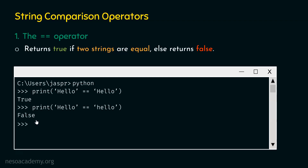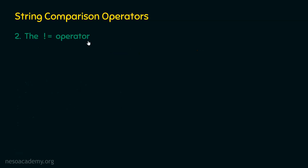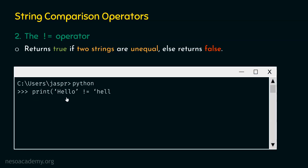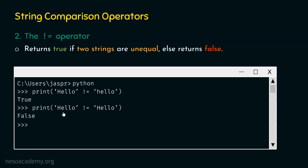Let's move on to the second operator: the not-equal operator (!=). The not-equal operator returns true if two strings are unequal, else returns false — it is just the opposite of the equality operator. For example, print('Hello' != 'hello') returns true because the first characters are not equal. And print('hello' != 'hello') returns false because these two strings are exactly the same.